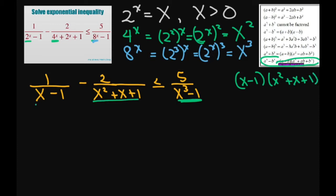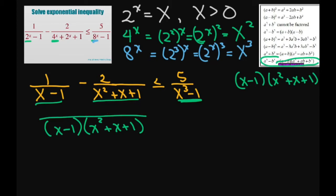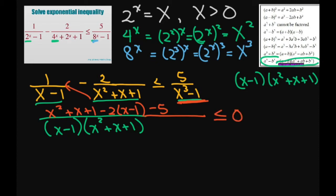That is what we have here for a common denominator. So working on the left-hand side to get a common denominator of (X minus 1)(X squared plus X plus 1), the numerator becomes X squared plus X plus 1 minus 2 times (X minus 1). Since the right-hand side has the same denominator, we subtract it over and set the whole expression less than or equal to 0. Simplifying the numerator: we get X squared, then plus X minus 2X giving minus X, then 1 plus 1 minus 5 giving negative 2.